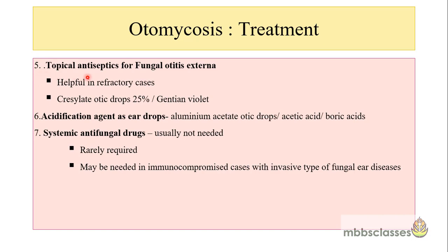Topical antiseptics also help in managing fungal otitis externa, especially in refractory cases. In those cases, you may advise glycerate or otic drops, and gentian violet — though gentian violet is avoided in patients with tympanic membrane perforation. Acidification agents are used as ear drops because acidification helps inhibit the growth of both bacteria and fungus. Acidification agents include aluminum acetate otic drops, acetic acid, or boric acid. Systemic antifungal drugs are usually not needed in otomycosis management, but if a patient is immunocompromised presenting with invasive fungal ear disease, systemic antifungal drugs must be added.